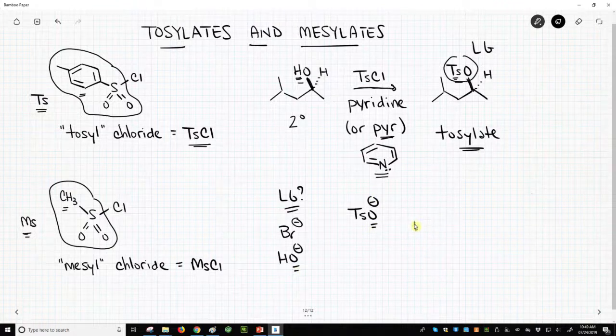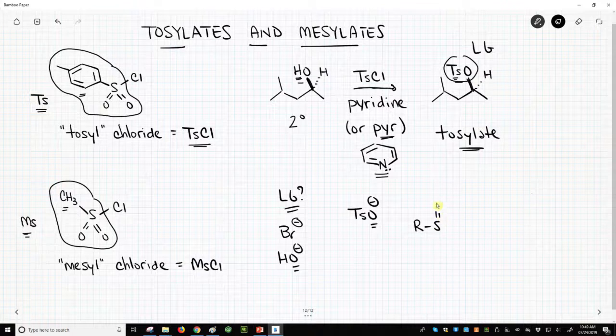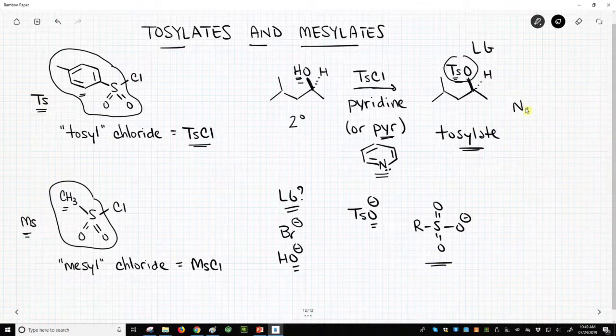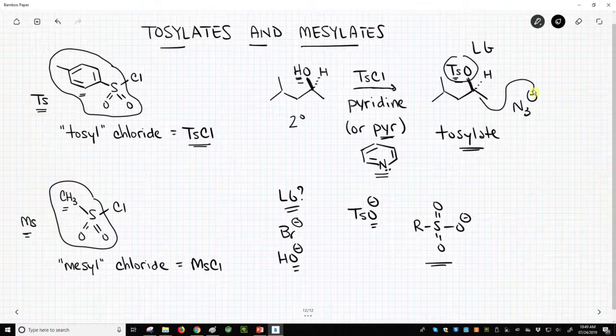Well, let's draw the structure, kind of a minimized structure, just with an R group. So this is now our leaving group. This is what's going to leave when our nucleophile reacts. Let's say azide reacts with this. It's going to kick that out.